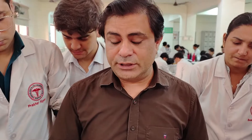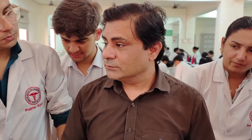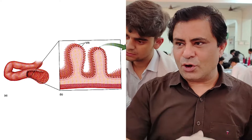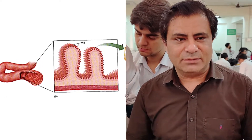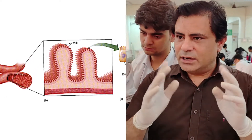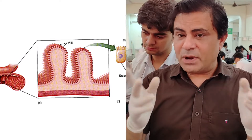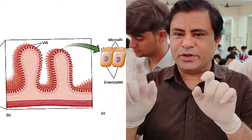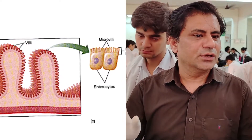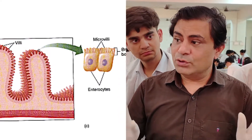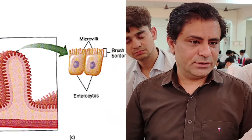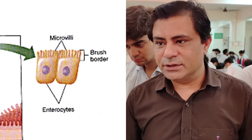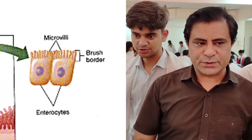Another thing is the microvilli. On the luminal surface of the mucosal epithelium, the cell membrane of the mucosal epithelial cells gives out finger-like projections at the cellular level. Those are microvilli, and they also increase the surface area for absorption.